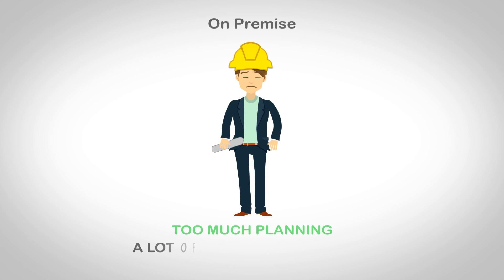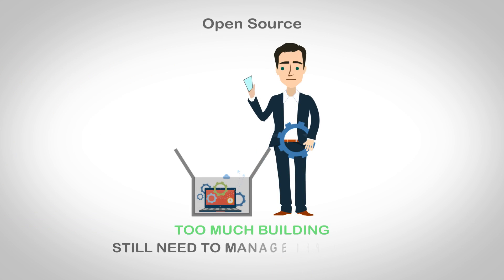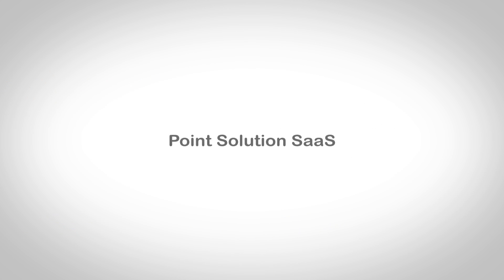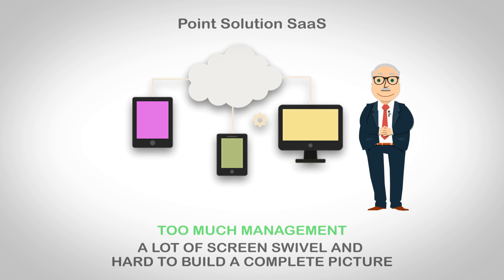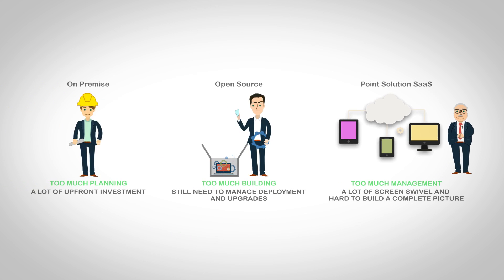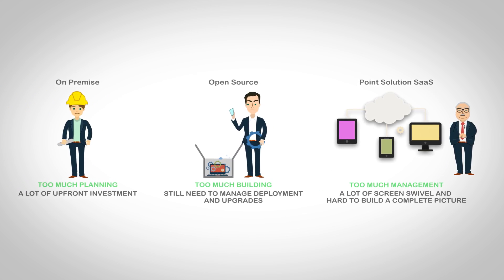Current solutions, such as on-premise applications or open source tools, require a lot of work in hardware setup, install, and ongoing application management. Software as a service based products are better because they allow you to focus on the core problem. However, current products handle the problem in isolated parts — that is to say, they manage only logs or only metrics.